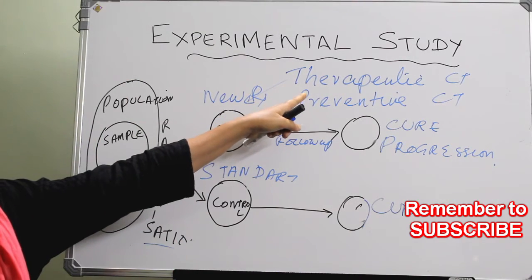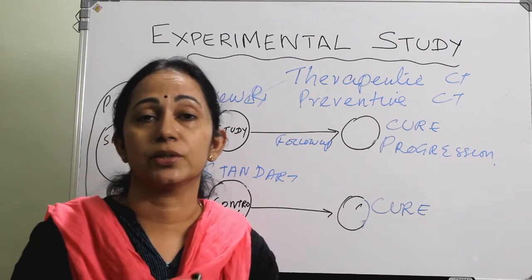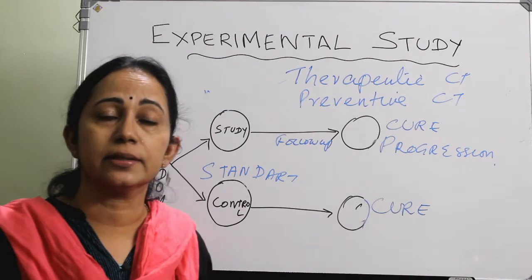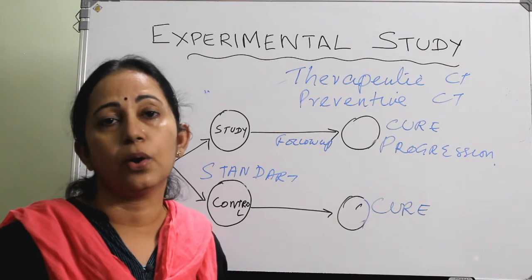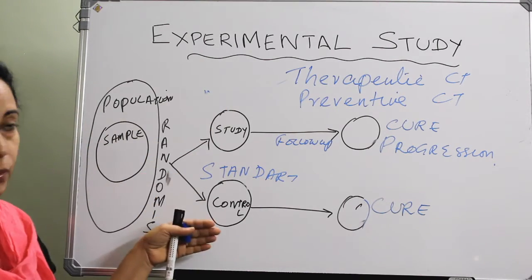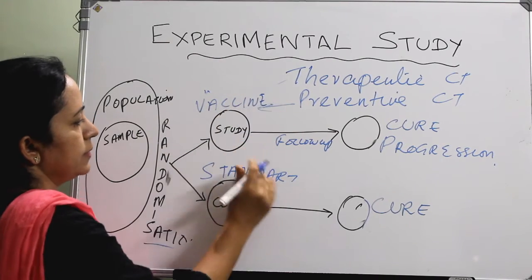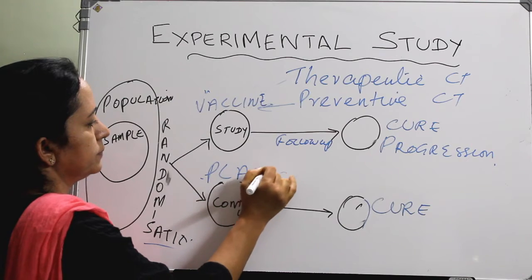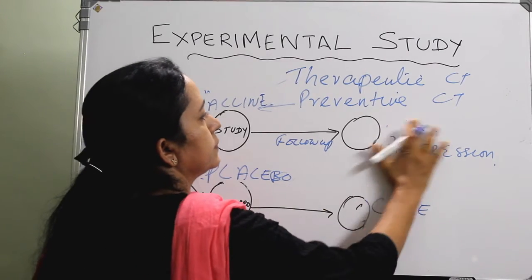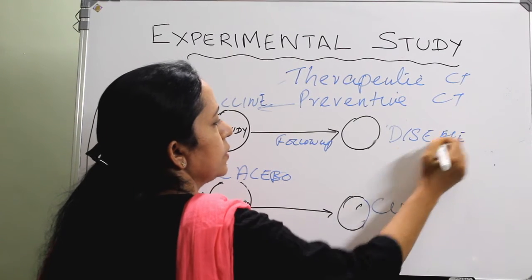In a preventive clinical trial, a preventive method is compared with a placebo. The population is not those having the disease but those who are susceptible or at risk. Sampling is done, randomized into study and control groups. The study group gets the vaccine and the control group gets the placebo. Both are followed up to find out whether the disease develops or not.